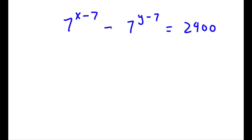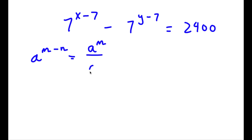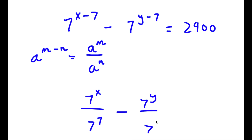Now for the bonus problem: 7 to the power of x minus 7, minus 7 to the power of y minus 7, equals 2400. Using the rule a^(m-n) equals a^m over a^n: 7^(x-7) becomes 7^x over 7^7, and 7^(y-7) becomes 7^y over 7^7. So the equation becomes 7^x over 7^7 minus 7^y over 7^7 equals 2400.